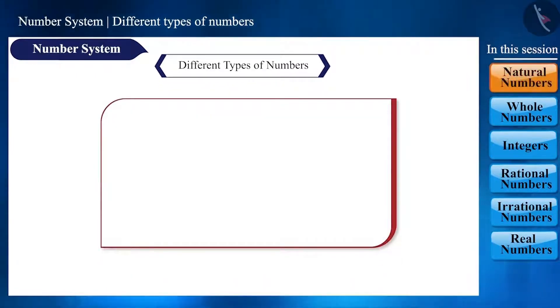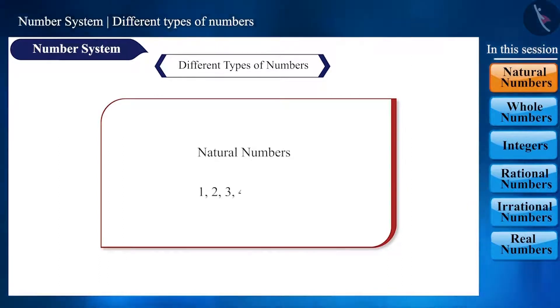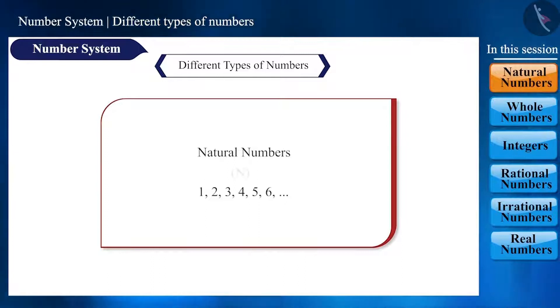Let's start with natural numbers. These are the numbers that come to mind as soon as the term number is mentioned, such as 1, 2, 3, 4, 5, 6, etc. We refer to it with the symbol N.